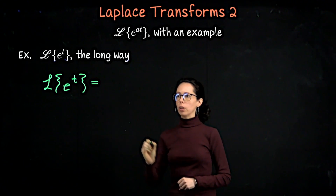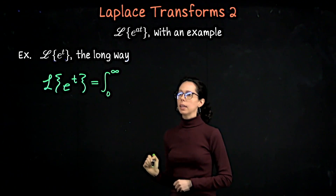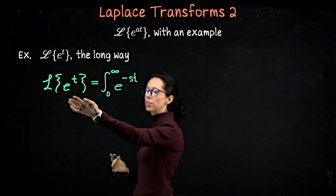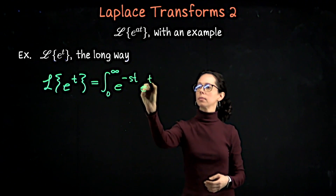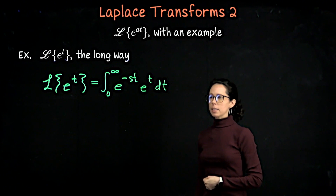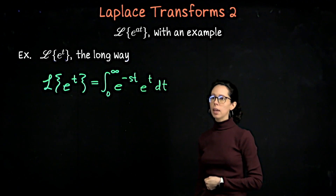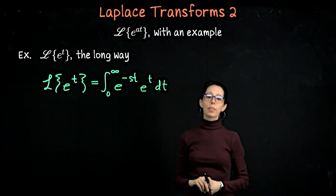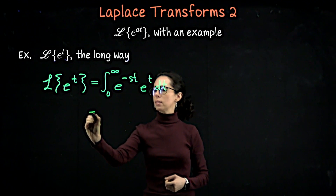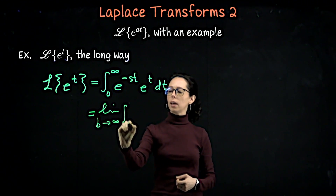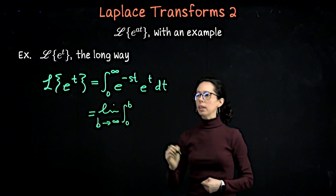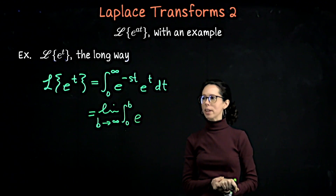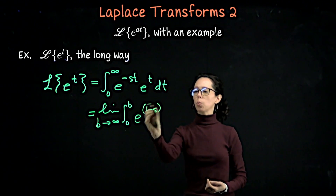This is going to be an improper integral from 0 to infinity of e to the negative st — which is always present in the integrand for the Laplace transform — multiplied by what we are transforming, which in this case is e to the t. We have the product of two exponentials, so we can combine them. Let's switch this improper integral so that the upper bound is replaced with b, which we then send to infinity. So this is the limit as b goes to infinity of the integral from 0 to b of e to the negative st plus t, which simplifies as e to the 1 minus s times t.